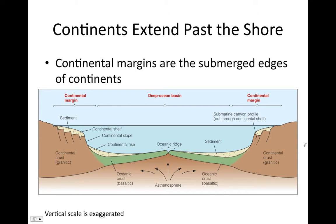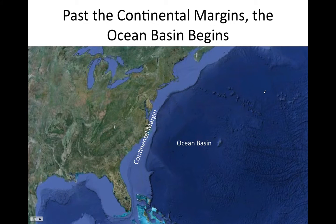The first feature of ocean basins we're going to talk about are the continental margins — the submerged edges of continents. Here you can see a figure showing the continental margins. This is the continental lithosphere, and this portion of the continent that is submerged is known as the continental margin. The shade of blue represents water depth — darker blue is deeper, lighter blue is shallower. This light blue area is the submerged edge of the continent, extending out to about here. This is the continental margin of North America, and there is continental margin on the other side as well.